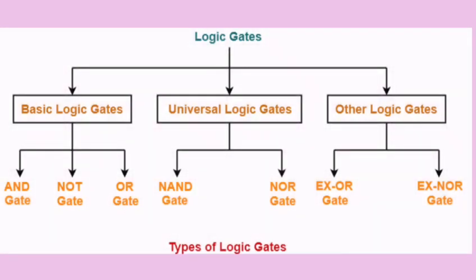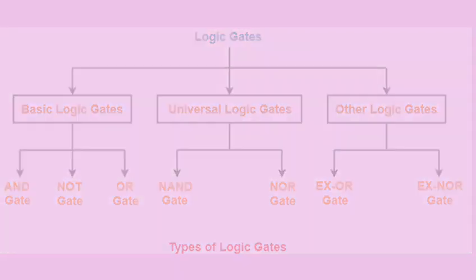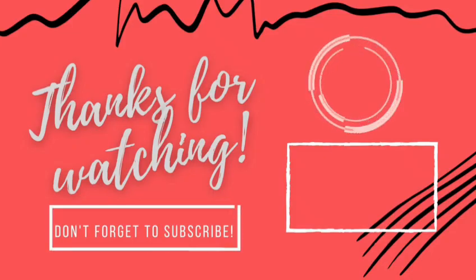In conclusion, a summary of the class: we have three categories of logic gates — the basic logic gates, the universal logic gates, and other logic gates. These form the four main types of logic gates, where AND, NOT, and OR are the basic gates, and NAND and NOR are the universal gates. Thanks for watching and see you in the next class.